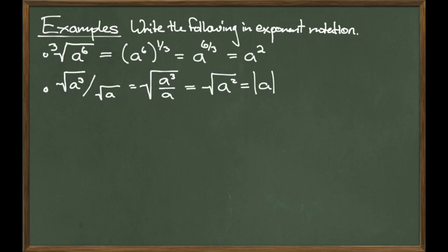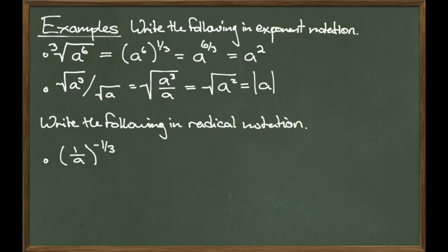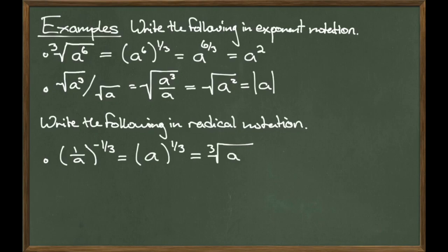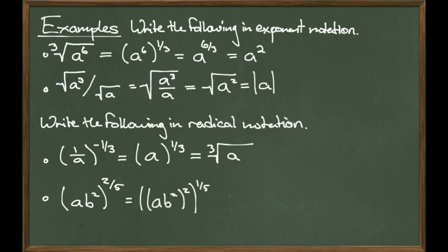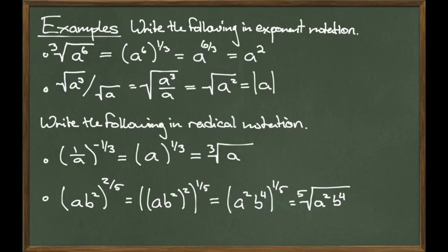For our next set of examples, we'll be given something in exponential notation and asked to write it in radical notation. Begin with the expression (1/a) raised to the negative 1-third. The minus in the exponent will flip the fraction 1 over a upside down to give us a to the 1-third. Converting this to radical notation gives us the cube radical of a, and we're done. For our next example, consider a times b squared all raised to the 2-fifths power. I have a 2 in the numerator of this rational exponent, so I will apply that power of 2 to the quantity a times b squared. Leaving the 1-fifth behind, I then square the inside, which gives me a squared times b to the 4th to the 1-fifth. And I translate the 1-fifth to radical notation like so, and we're done.